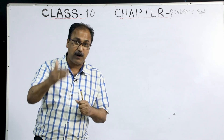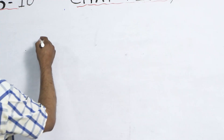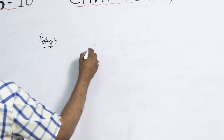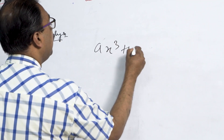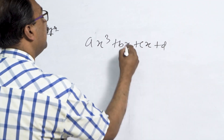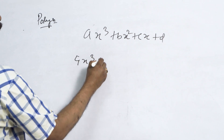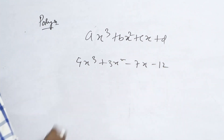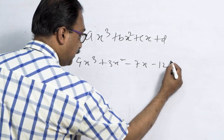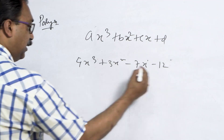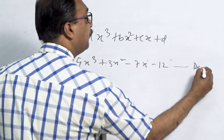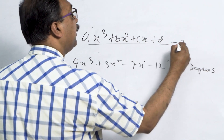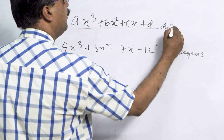Degree means the highest power of the polynomial. For example, a polynomial — poly means many. I am writing here Ax³ + Bx² + Cx + D. It may be 4x³ + 3x² − 7x − 12 like that. What is the highest power here? There is x power 0, x power 1, x power 2, x power 3. The highest power 3 means degree 3. Degree 3 is not a quadratic equation.